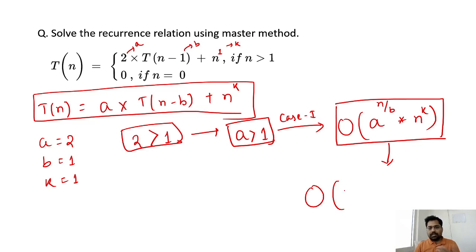Those who are new, please check the detail video. Again I am saying, so a value is 2, n by b which is 1, b value is 1, into n to the power k which is this one. To simplify it, you can write 2 to the power n into n. This is the time complexity.